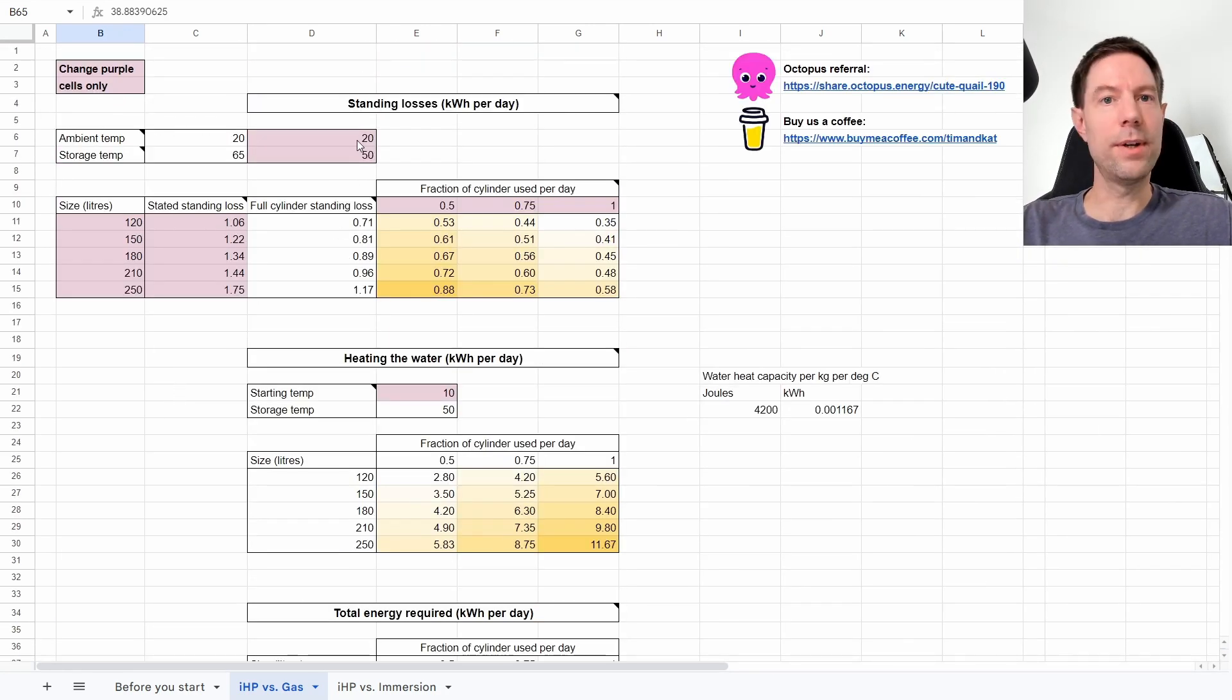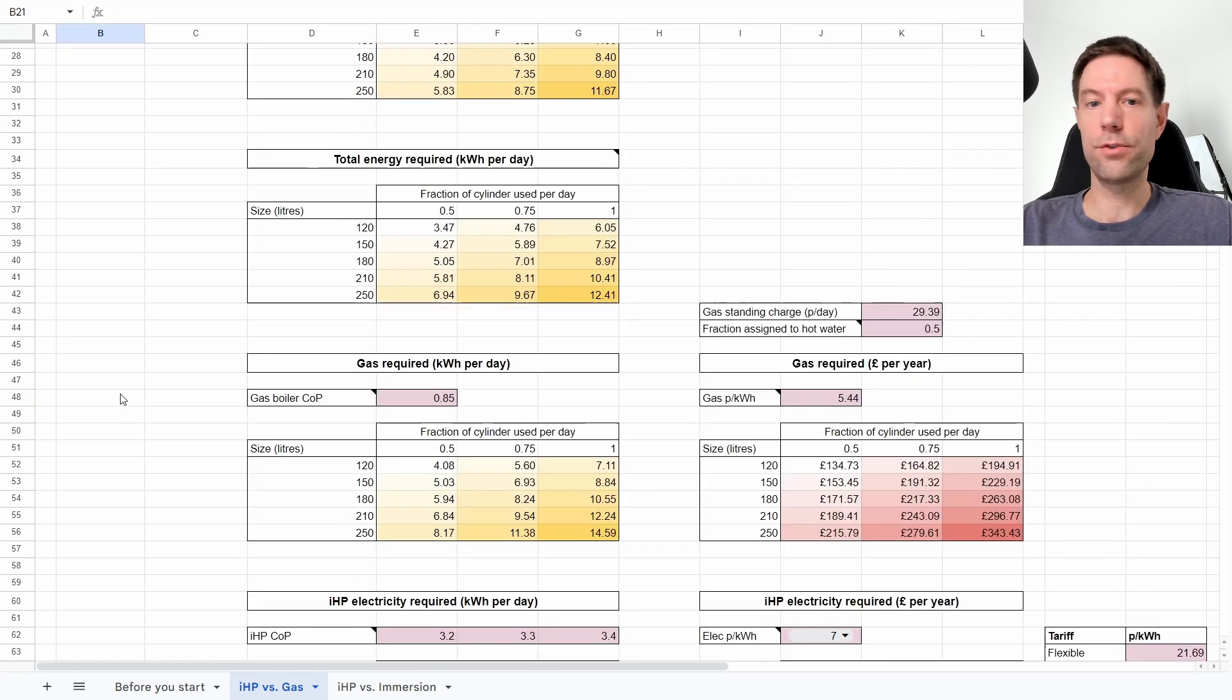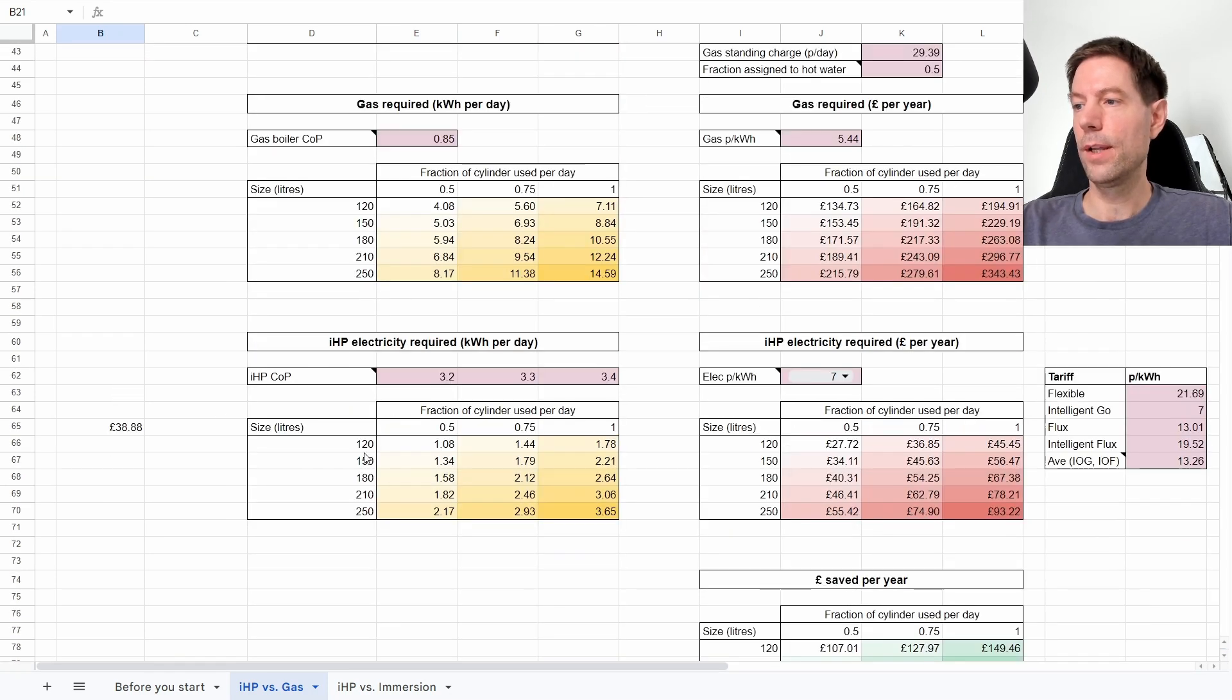Now if we go back up here and we assume actually we've installed the cylinder in our garage, which at its worst gets down to about 12 degrees, so if I select 12 degrees there and that will then change the various calculations. We've still got inlet temperature of 10 degrees. Now if I scroll back down to where we were before, you can see that we're now using 1.58 kilowatt hours which gives us a total annual running cost of £40.31.